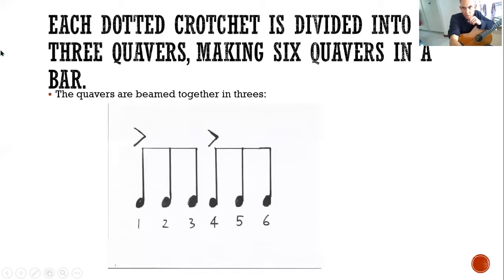Each dotted crotchet is divided into three quavers, making six quavers in a bar. The quavers are beamed together with accents, so you make the first beat a little bit stronger than the other one. One, two, three, four, five, six. One, two, three, four, five, six.